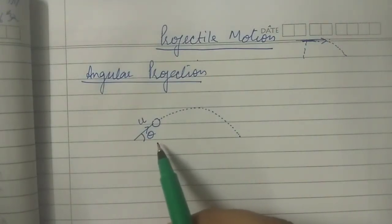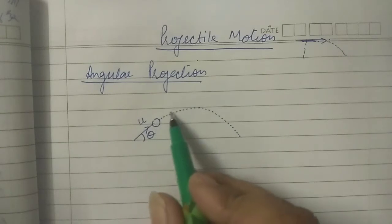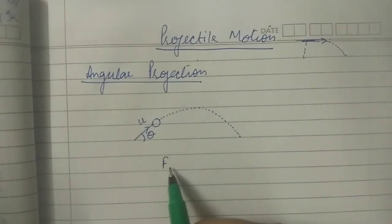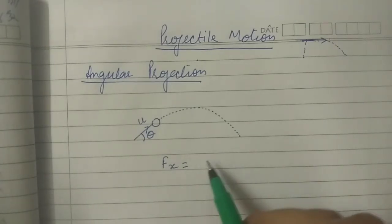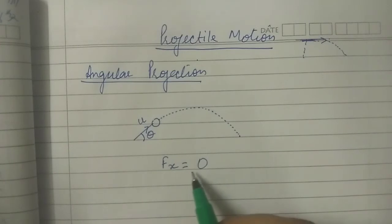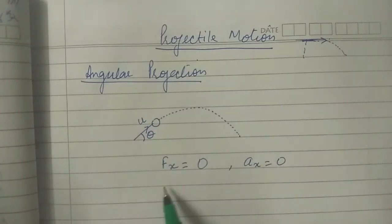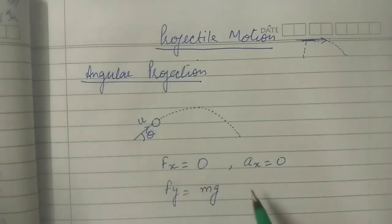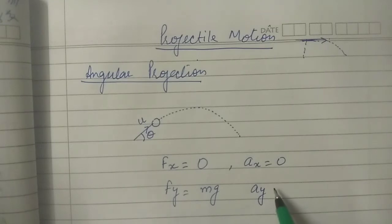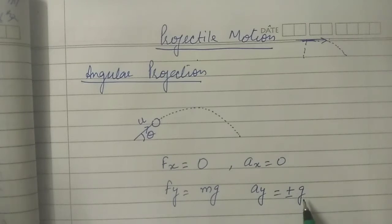Let u be the initial velocity given to the projectile, making an angle theta with the x-axis. When the object is in motion, the horizontal force - or force along the x-axis - is zero. After the initial projection, no horizontal force acts on the object, so acceleration along x is zero. But vertical force mg exists, so acceleration along y is plus or minus g.